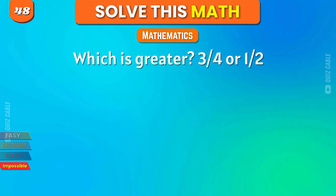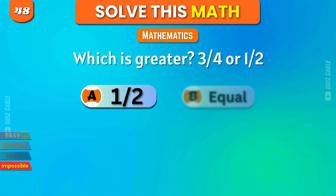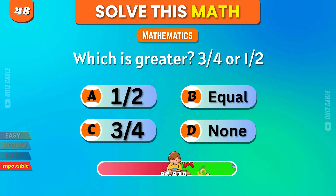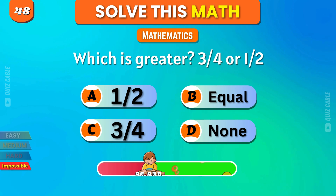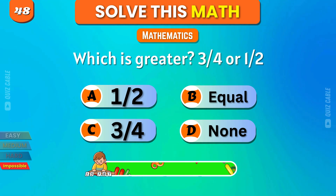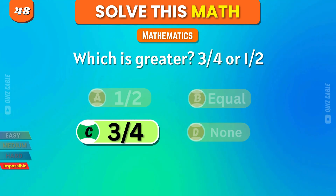Which is greater, 3 quarters or 1 half? 1 half, equal, 3 quarters, none. Correct answer, 3 quarters.